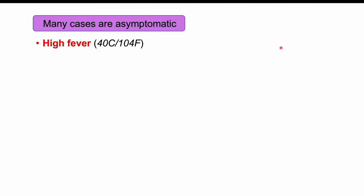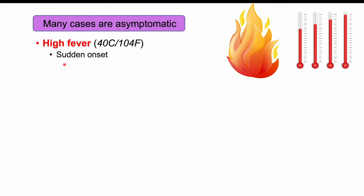Where signs and symptoms do appear, the child will have a very high fever — around 40°C (104°F) or even higher — with a very characteristic sudden onset. Because of this very high fever, some patients may have a febrile seizure, which occurs in roughly 15% of patients. This is also related to the virus's ability to enter the central nervous system. In fact, HHV6 is a very important cause of febrile seizures in young infants, accounting for approximately 10 to 45% of febrile seizures.